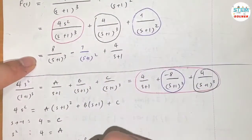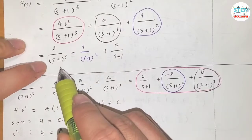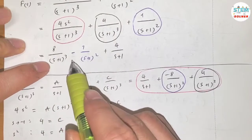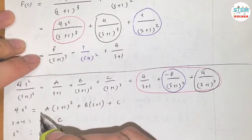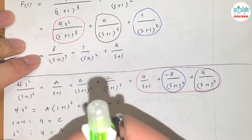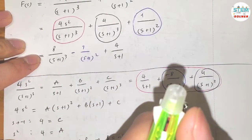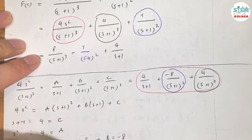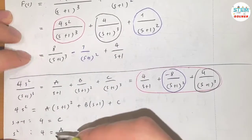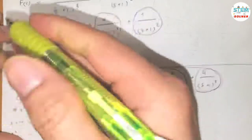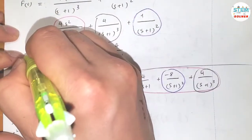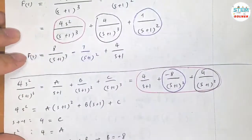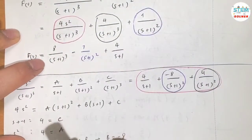We're almost done. Now take the inverse Laplace transform of F(s). Let me use a different color — this is our F(s), and we need to find the inverse of each term.